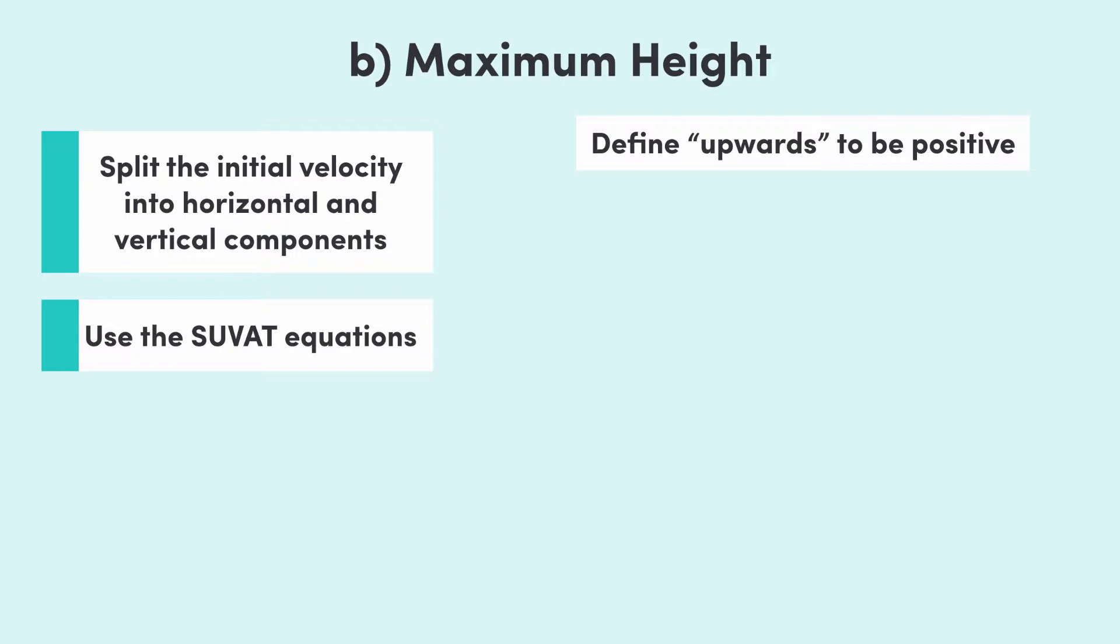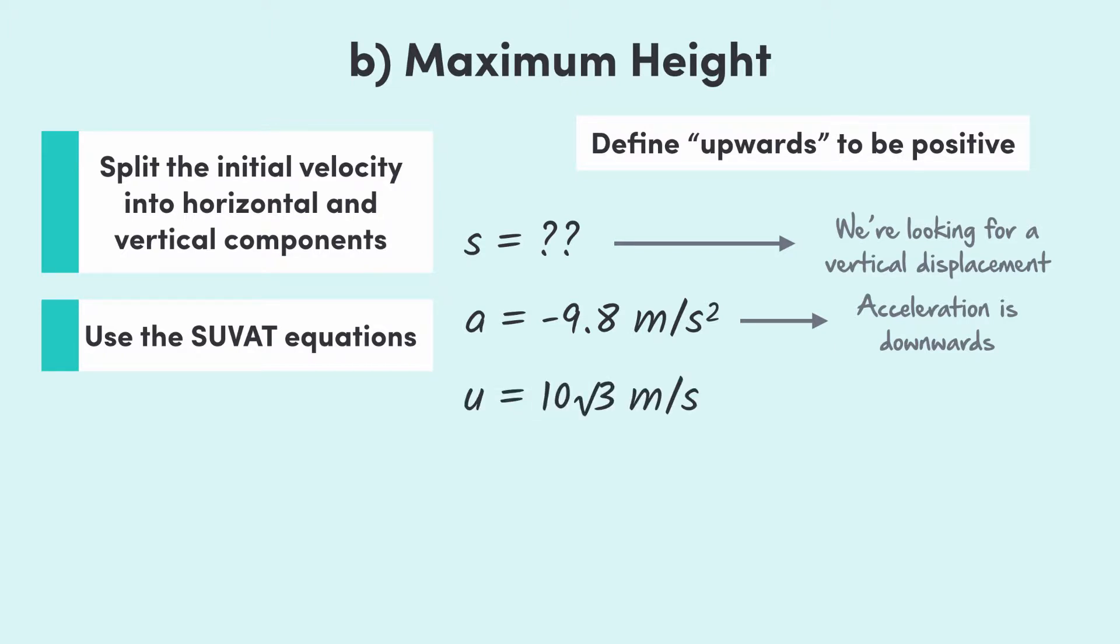In part b, we're asked to find the maximum height of the textbook. Since height is a displacement, we're looking for s. This is a vertical problem since we're only looking for displacement in the vertical direction. So, that means we also have the acceleration, which is negative 9.8 meters per second squared since it's downwards. And, we also have the initial velocity, which is 10√3 meters per second. Now, the last sneaky bit of information that we do have in this case is actually the final velocity.